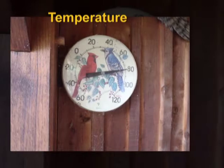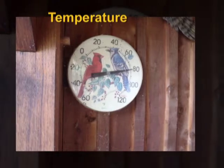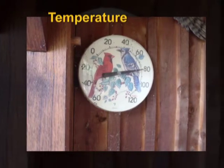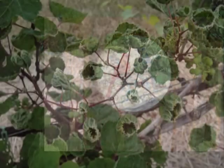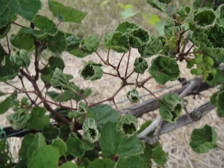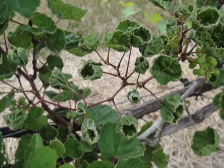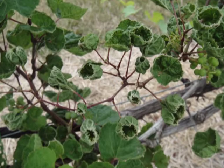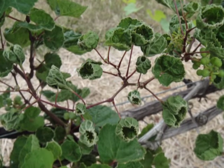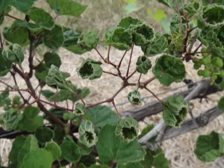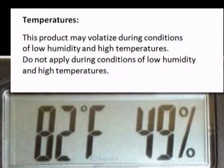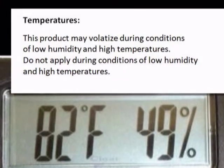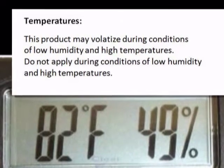A third factor is temperature. High temperatures, such as above 85 degrees during or immediately after application, may cause some pesticides to vaporize and move away from the application site. Pesticides in a vapor or gaseous state may cause damage to neighboring sites. The pesticide label will list any application restrictions due to temperature.